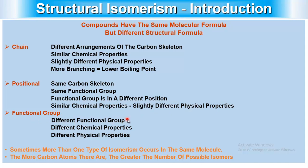The third type is functional group isomers, which have different functional groups, so they have different chemical properties and different physical properties. Sometimes more than one type of isomerism occurs in the same molecule. The greater the number of carbon atoms, the greater the number of possible isomers.